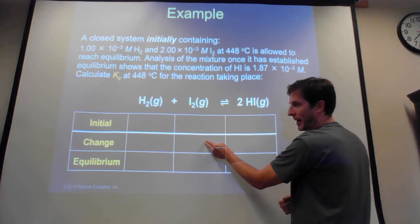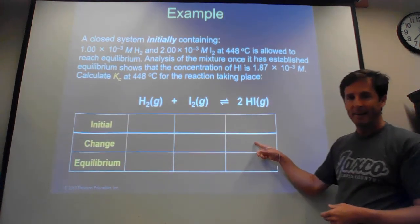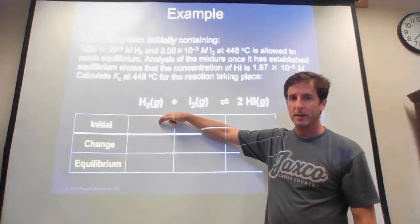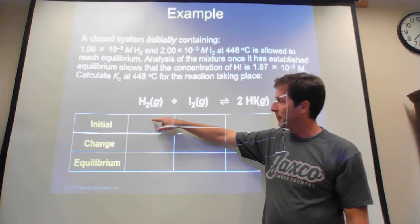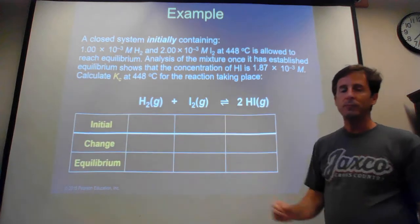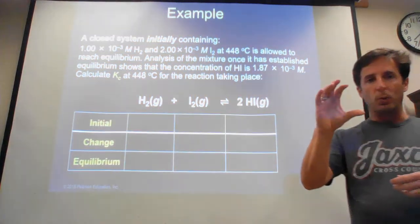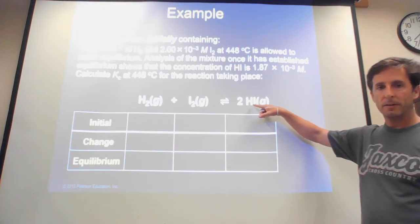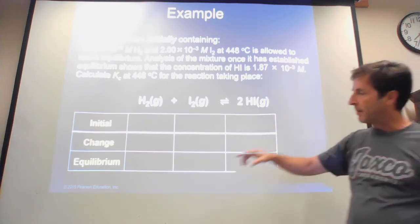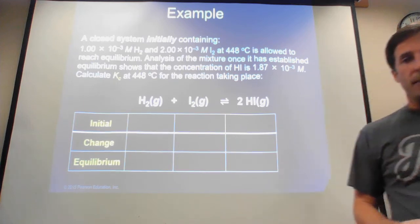Hydrogen and iodine react in a 1:1 ratio, so the same change value goes under both — half of the HI change. The reactants are being subtracted, so make sure to subtract those two. Once you have those numbers, the equilibrium concentration equals the initial value minus the change. Then set up the equilibrium expression: Kc equals products over reactants. HI goes on top squared, and the two reactant concentrations go on the bottom, multiplied together.